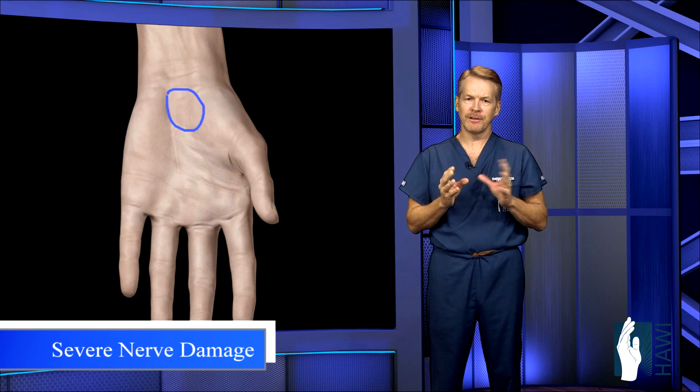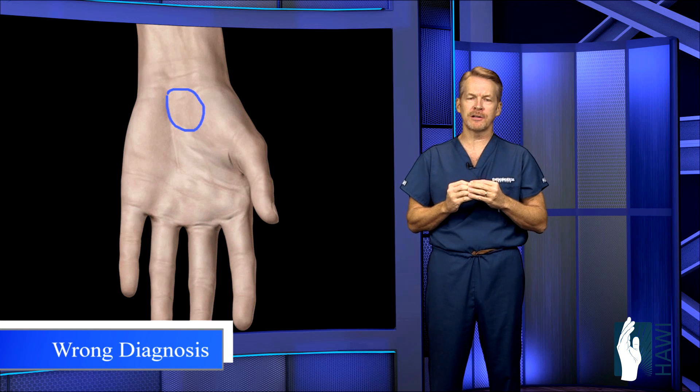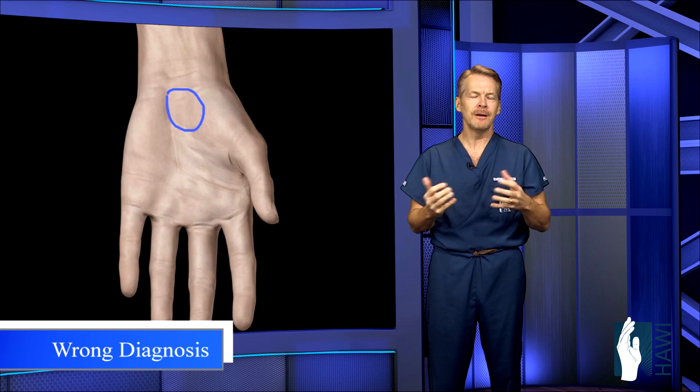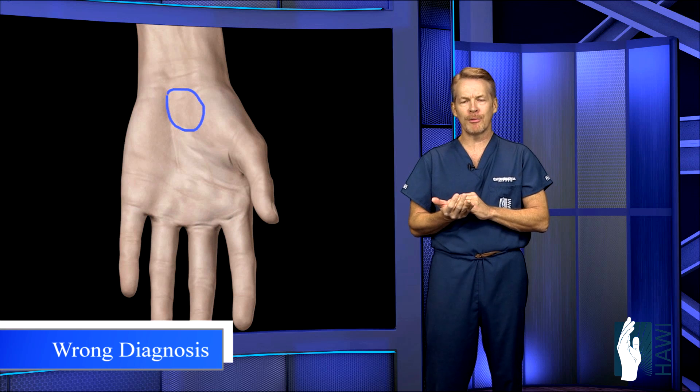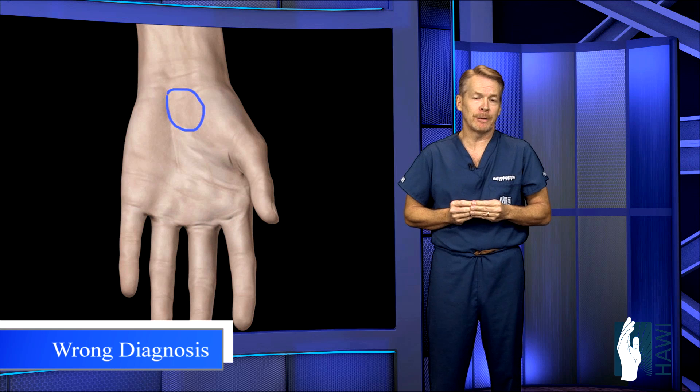The second, and we see this too often, is the patient was misdiagnosed. The doctor gets a nerve conduction test that shows carpal tunnel syndrome, but in reality it was underlying arthritis and they didn't really have symptoms of carpal tunnel. They have the surgery, they don't get any relief obviously.